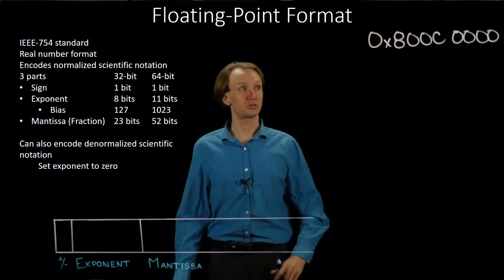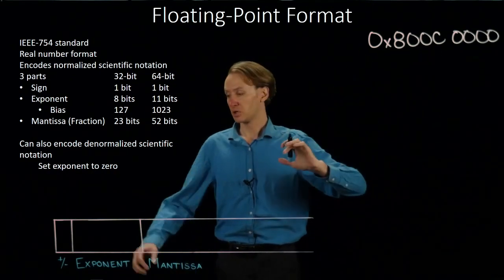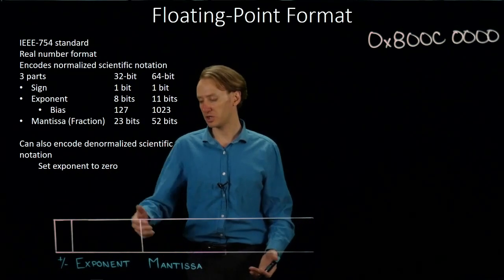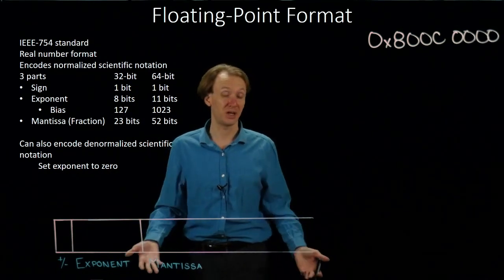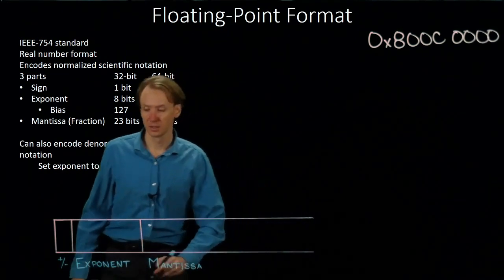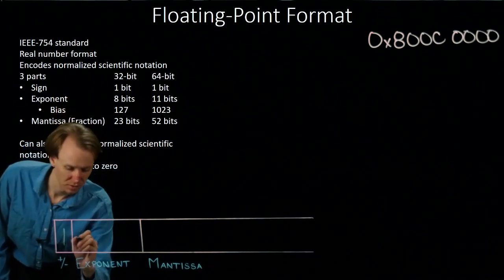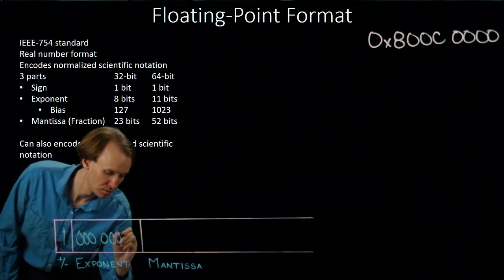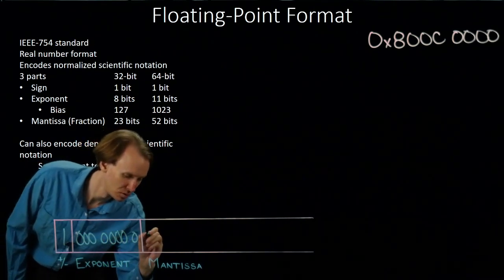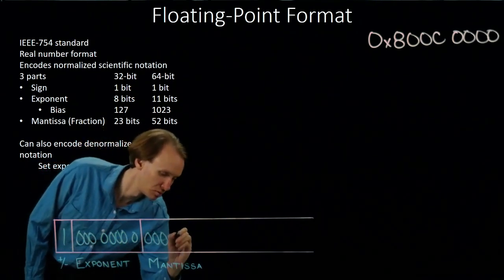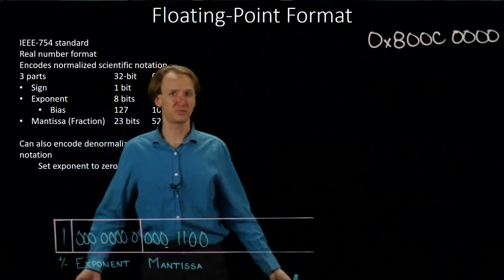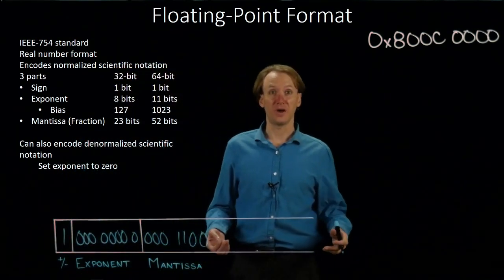To do this, I'll start by placing all the bits from my number into the floating-point format so I can tell which bits are associated with the sign, the exponent, and the mantissa. So I have 8, 0, 0, c, and then four more blocks of zeros that won't affect the value of my number.